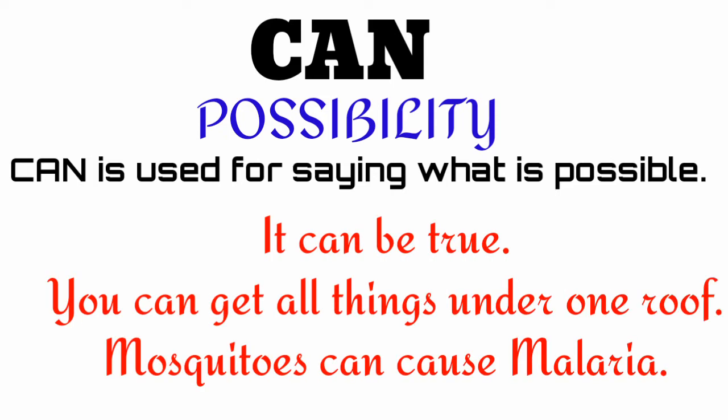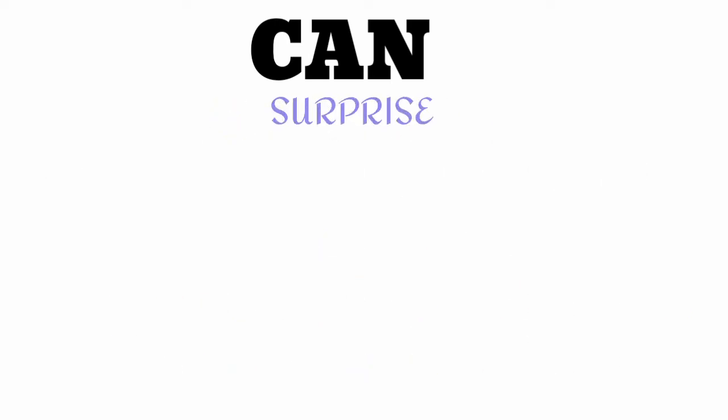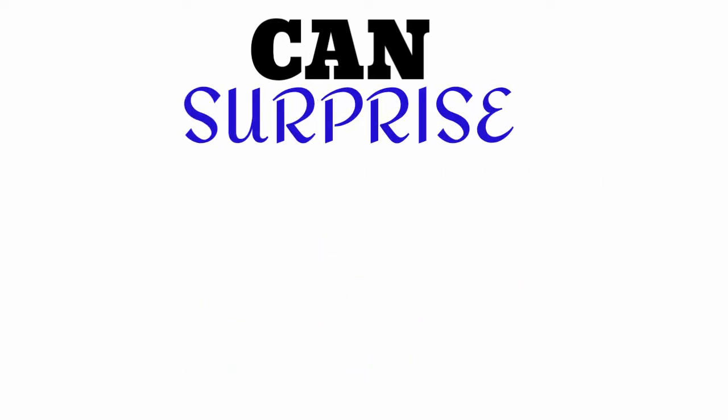Number four: can denotes possibility. Can is used for saying what is possible. For example: 'It can be true.' 'You can get all things under one roof.' 'Mosquitoes can cause malaria.'